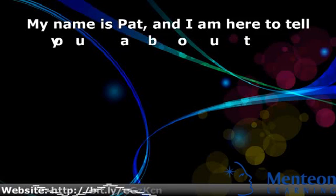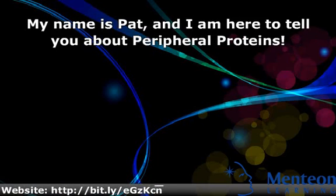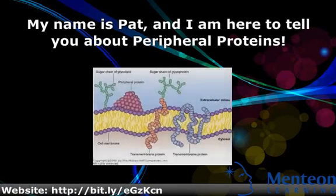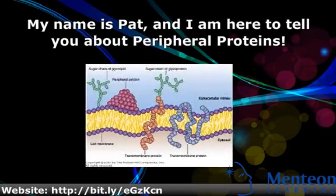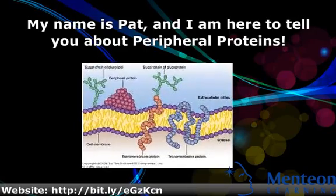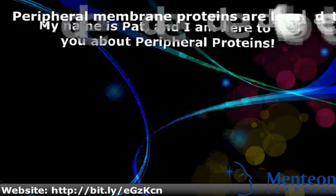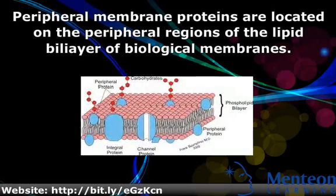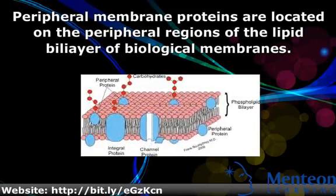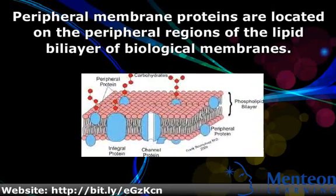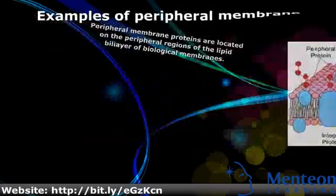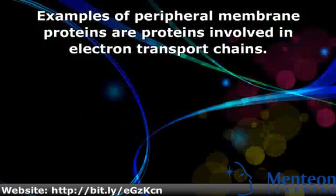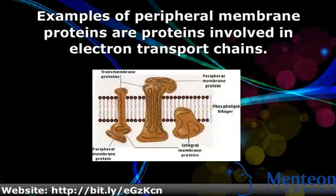Hello. My name is Pat, and I am here to tell you about peripheral proteins. Peripheral membrane proteins are located on the peripheral regions of the lipid bilayer of biological membranes. Examples of peripheral membrane proteins are proteins involved in electron transport chains.